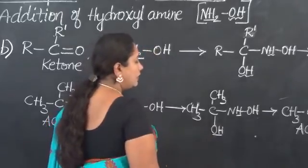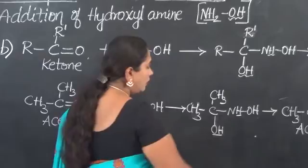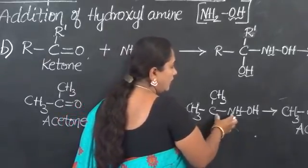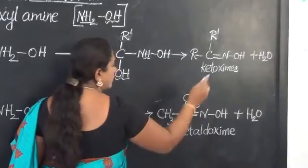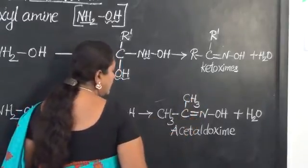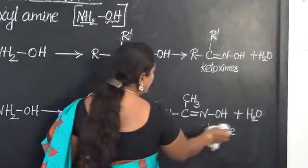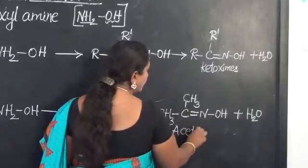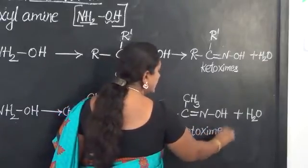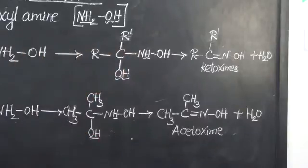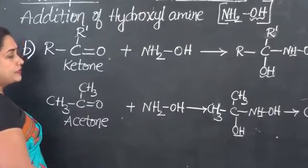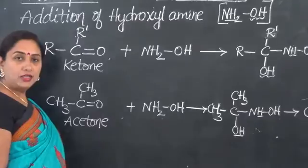This is an unstable compound and will eliminate a molecule of water. OH from the carbon side and H from the nitrogen side go out as water. Therefore, carbon and nitrogen will be linked by a double bond. The final product obtained is a ketoxime — specifically called acetoxime because it is obtained from acetone as the starting material.